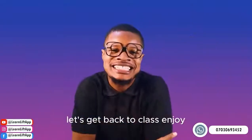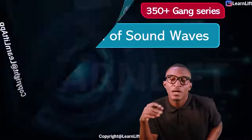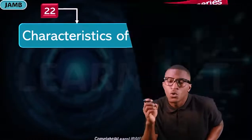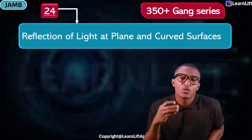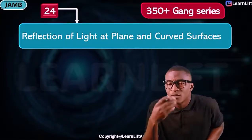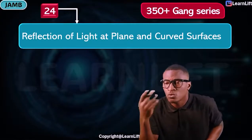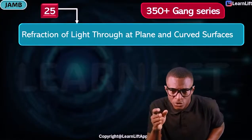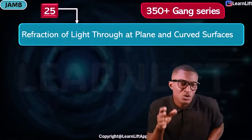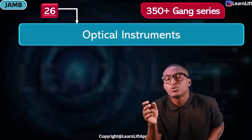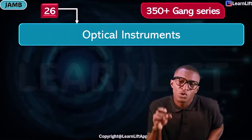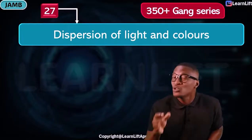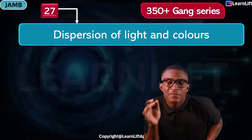Now, continuing — we'll talk about waves, then sound waves. We're going to talk about the characteristics of sound waves. After that we'll talk about light waves, then reflection of light — reflection involving plane surfaces and curved mirrors. Then refraction — we'll talk about lenses. Refraction is for lenses while reflection is for mirrors. In chapter 26 we'll talk about optical instruments, and further talk about dispersion of light and color.